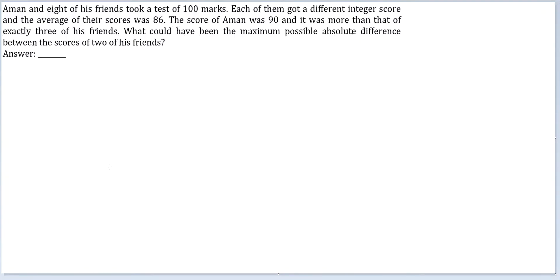Let's look at this question. Amman and 8 of his friends took a test of 100 marks, which means there are a total of 9 people. Each of them got a different integer score and the average of their scores was 86. The score of Amman was 90 and it was more than that of exactly 3 of his friends.